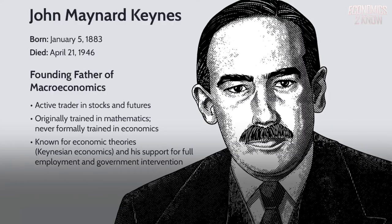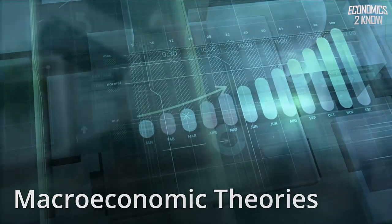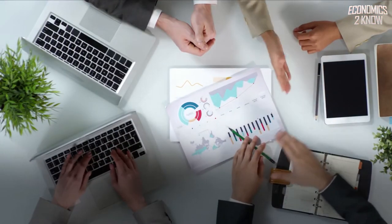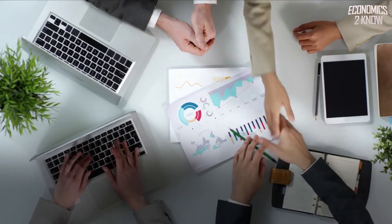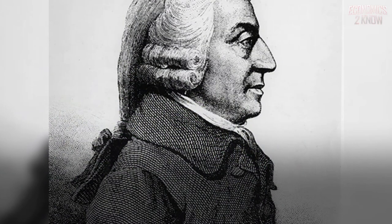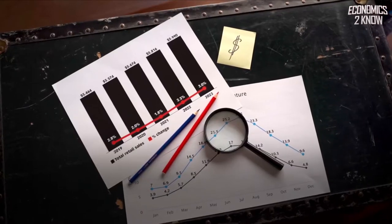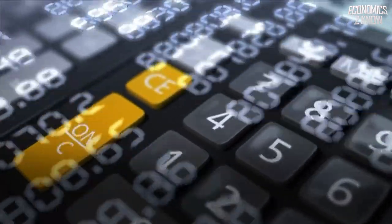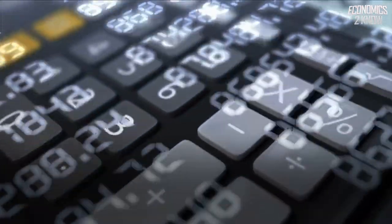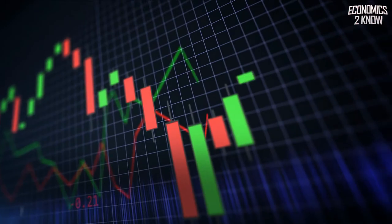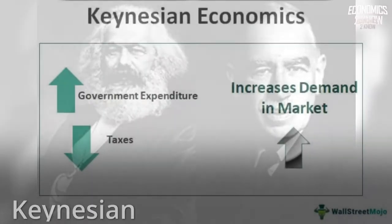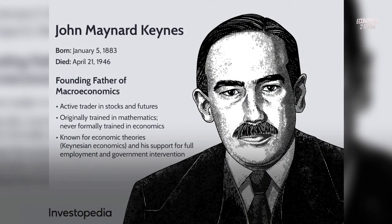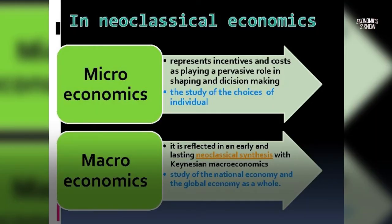Schools of thought in macroeconomics differ on how markets and their participants work. Classical economists, based on Adam Smith's initial views, believed prices, wages, and rates are flexible and markets tend to clear. The term 'classical economists' refers to a group who did not distinguish macroeconomics from microeconomics. Keynesian economics grew out of John Maynard Keynes's work and marked the birth of macroeconomics as a distinct field from microeconomics.